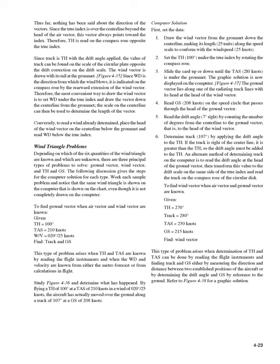Wind triangle problems: depending on which of the six quantities of the wind triangle are known, there are three principal types of problems to solve — ground vector, wind vector, and TH and GS. The following discussion gives the steps for the computer solution for each type. To find the ground vector when the air vector and wind vector are known. Given: TH = 100°, TAS = 210 knots, WV = 020°/25 knots. Find: track and GS.